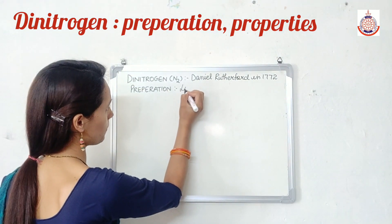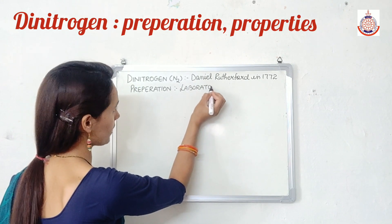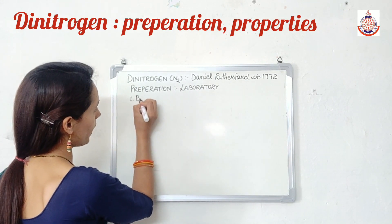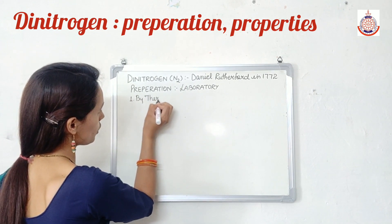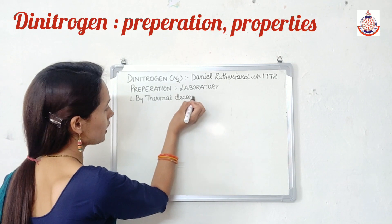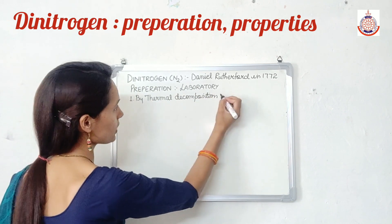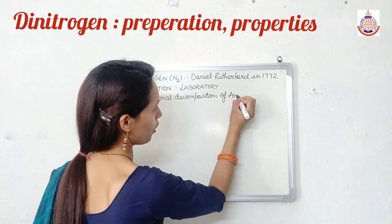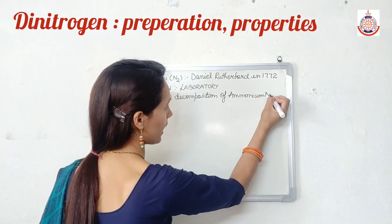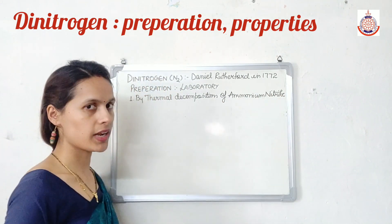If we talk about the laboratory preparation, we have three methods. The first one is by thermal decomposition — thermal decomposition means breaking of the substance by using heat — of ammonium nitrite.